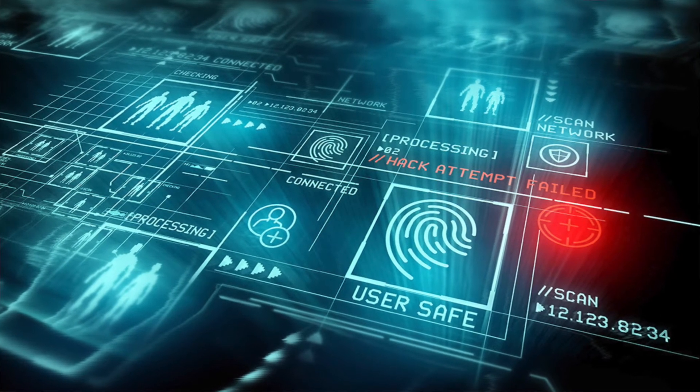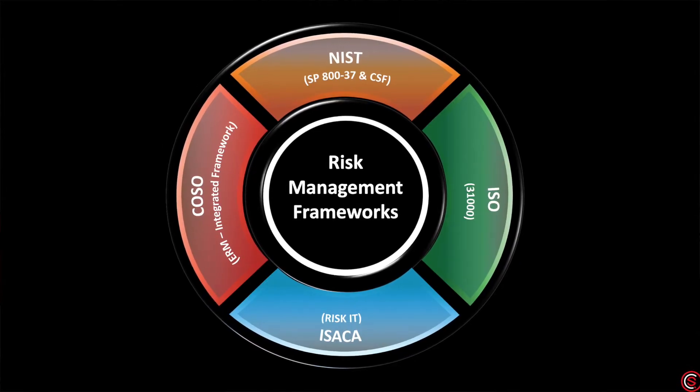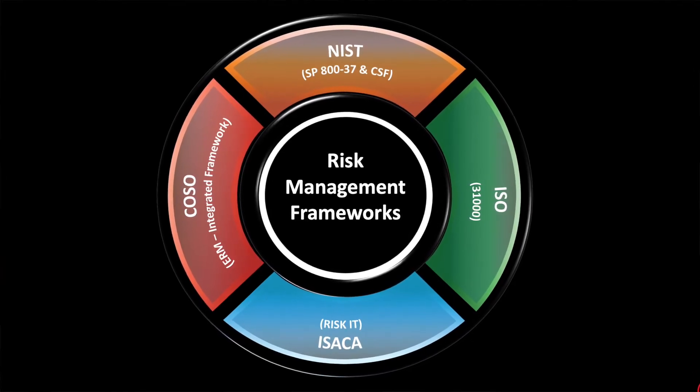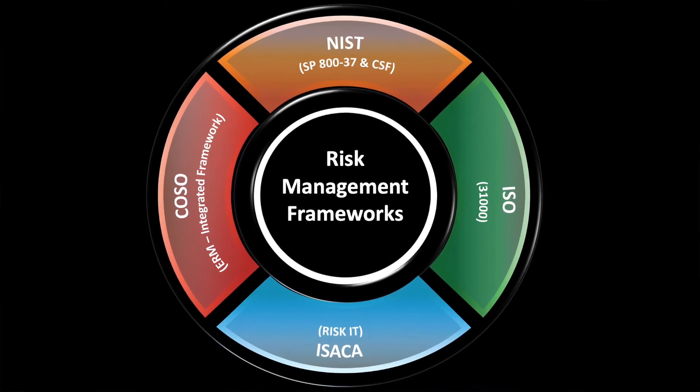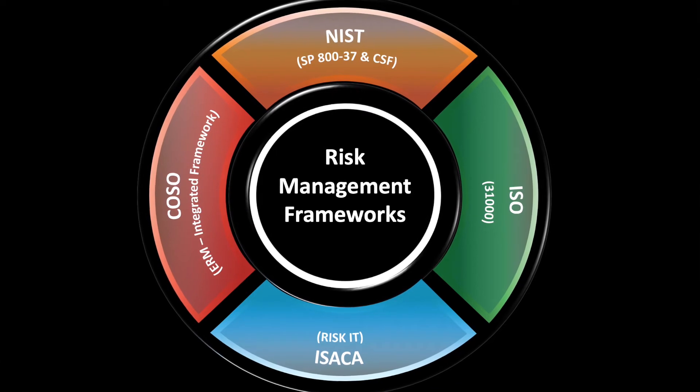Managing information risk depends on your organization's requirements, including applicable regulatory, statutory, or contractual obligations. You can use one or more risk management frameworks such as COSO, ISO, or NIST. The NIST Risk Management Framework — from the National Institute of Standards and Technology — is currently used by government entities to protect IT systems. It is a comprehensive, robust, and flexible framework that can be tailored to meet your organization's needs.